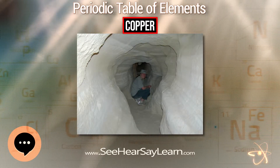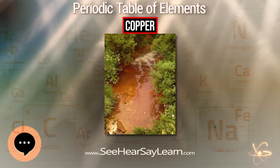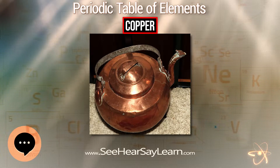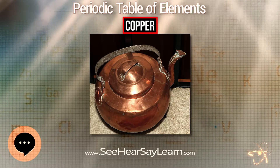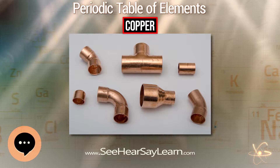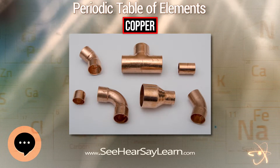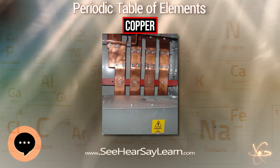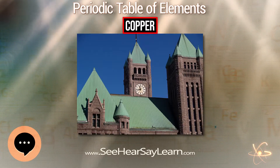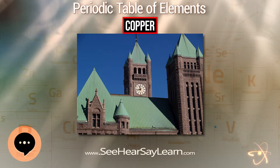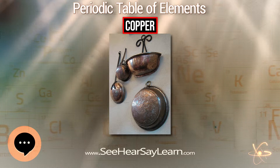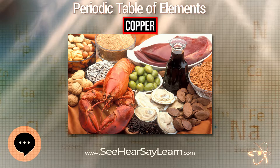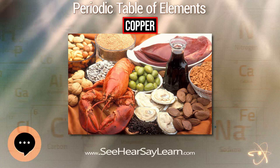Numerous copper alloys have been formulated, many with important uses. Brass is an alloy of copper and zinc. Bronze usually refers to copper-tin alloys but can refer to any alloy of copper, such as aluminium bronze. Copper is one of the most important constituents of silver and carat gold solders used in the jewelry industry, modifying color, hardness, and melting point. Some lead-free solders consist of tin alloyed with a small proportion of copper and other metals.